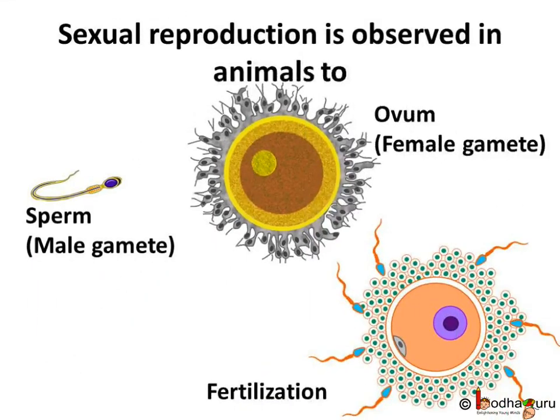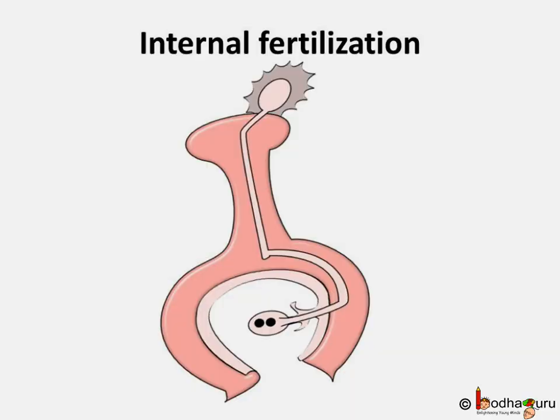The female gamete is called ovum and the male gamete is called sperm. The fusion of ovum and sperm is called fertilization. Here the fertilization is happening inside the female reproductive organ of the flower.